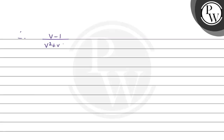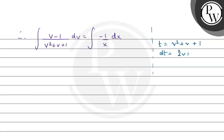Separating variables: (v minus 1)/(v squared plus v plus 1) dv equals minus 1/x dx. Integrating both sides, to get 2v plus 1 in the numerator — since d/dv(v² + v + 1) = 2v + 1 — we multiply and divide by 2. So we have one-half times the integral of (2v minus 2)/(v squared plus v plus 1) dv equals minus ln|x| plus constant c.